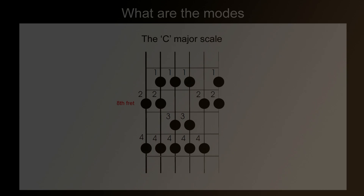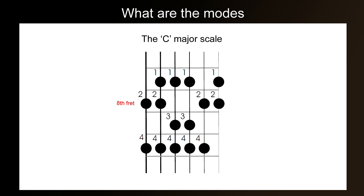Something you might have noticed from the theory part of this tutorial is that the Ionian scale and the major scale are exactly the same. So, if you already know the major scale, you can already play the Ionian scale. However, if you do already know how to play the two-octave C major scale, don't skip this tutorial, because we'll be looking at some new material towards the end. Now, how to play the two-octave Ionian scale.